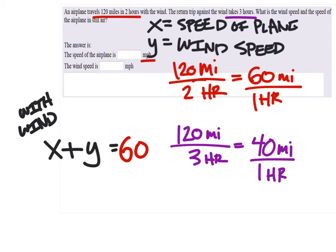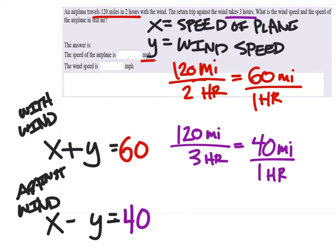That gives us our second equation. This one now is against the wind. So that gives me X, the speed of the plane in still air, and then minus the wind speed. Now the speed of the wind is going against you. It's taking away speed. So I'm going to have to subtract Y. And this one equals 40.